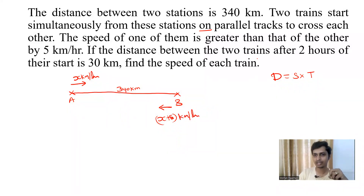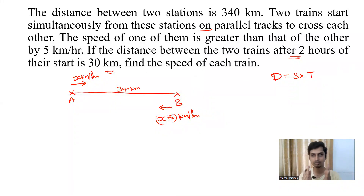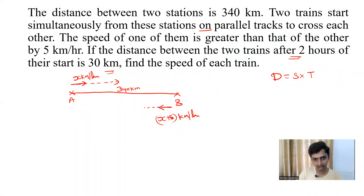The distance between the two trains after two hours of their start is 30 km. Assume the trains start at 7 a.m. — after two hours, at 9 a.m., the distance between both trains is 30 km. That means the train starting from A has covered a certain distance and the train starting from B has covered a certain distance. The train from B would have covered more distance since its speed is comparatively higher.